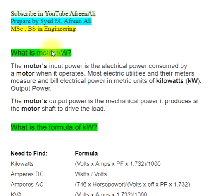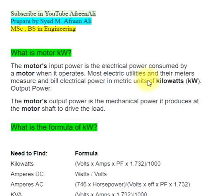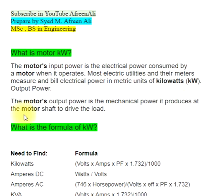The motor's input power is the electrical power consumed by a motor when it operates. Most electric utilities and their meters measure and bill electrical power in metric units of kilowatts, kW. The motor's output power is the mechanical power it produces at the motor shaft to drive the load.